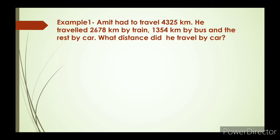To explain this question: Amit had travelled 4325 km in total by 3 means of transport. He travelled 2678 km by train and 1354 km by bus. We have to find how much he travelled by car.